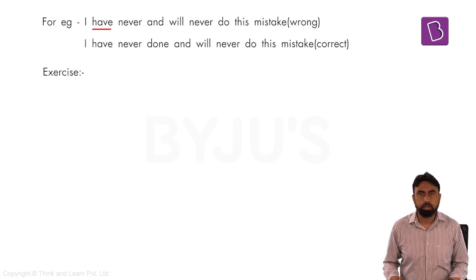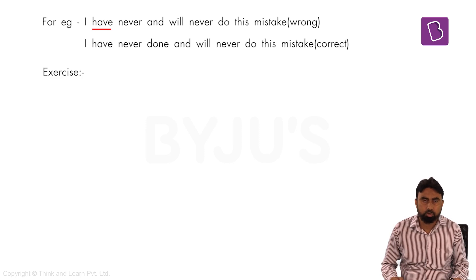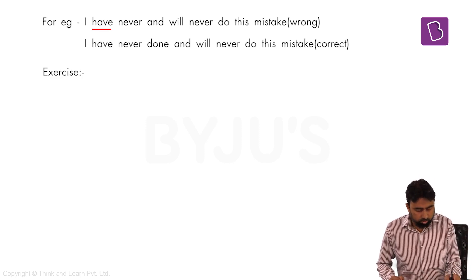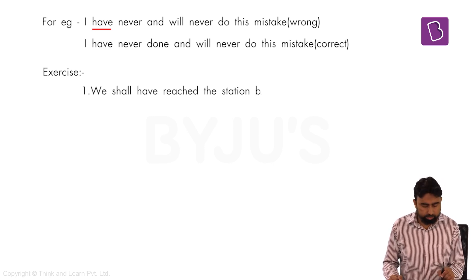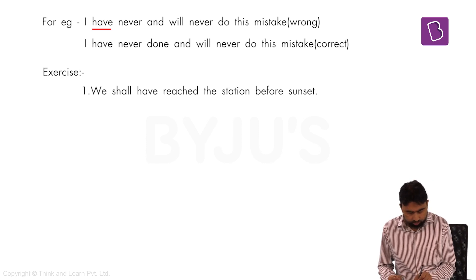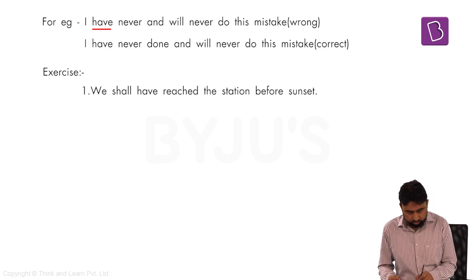Let's do some exercises. I will give you problems and you have to find the correct answer. First sentence: 'We ___ the station before sunset.' Options are: A) will be, B) shall, C) will, D) shall have.